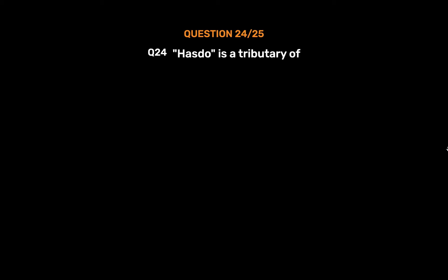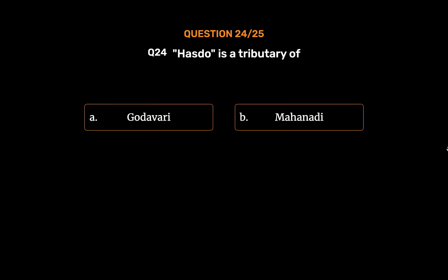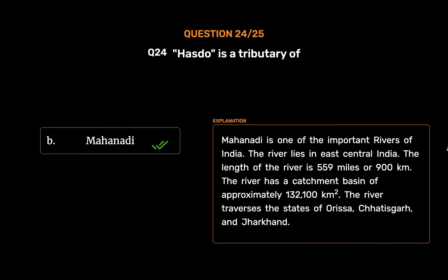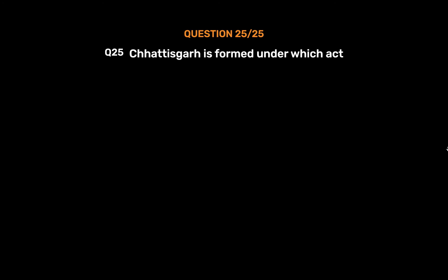Question No. 24: Hasdeo is a tributary of — Option A: Godavari. Option B: Mahanadi. Option C: Narmada. Option D: Indravati. The correct answer is Option B: Mahanadi. Mahanadi is one of the important rivers of India, lying in east-central India. The length of the river is 559 miles or 900 kilometers, with a catchment basin of approximately 1,32,100 square kilometers. The river traverses the states of Odisha, Chhattisgarh, and Jharkhand.